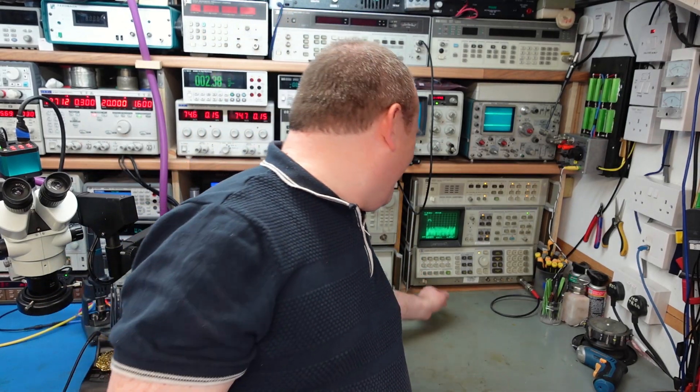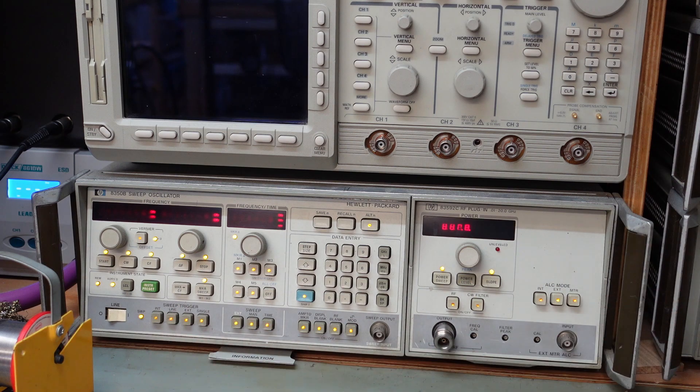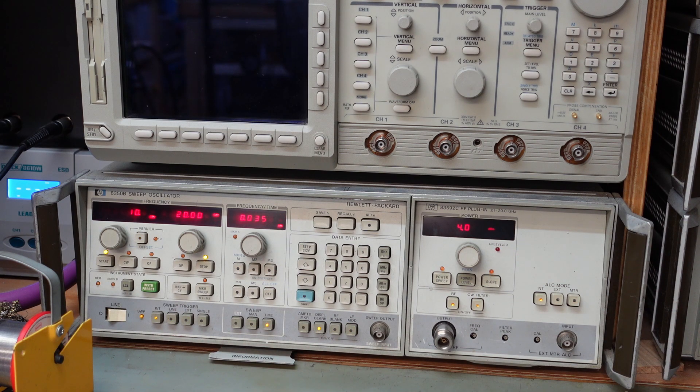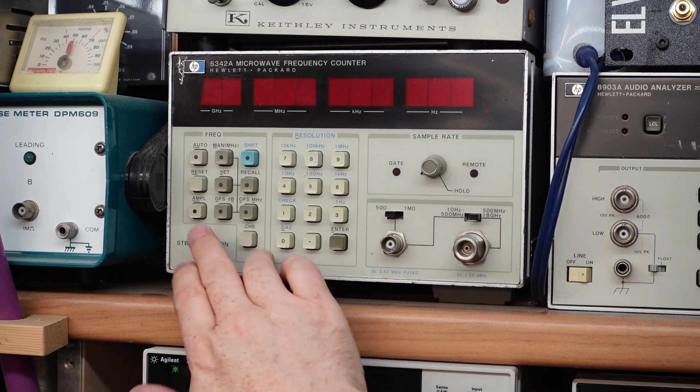And continuing the RF equipment, we have the sweep oscillator, an 8350B from Hewlett-Packard. This one's actually got a 20 gigahertz module plugged in, which can be used in conjunction with the frequency counter.